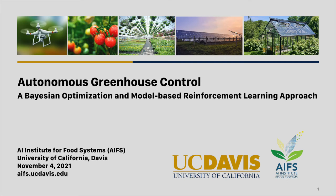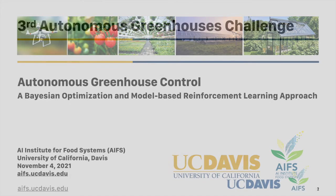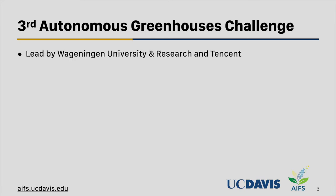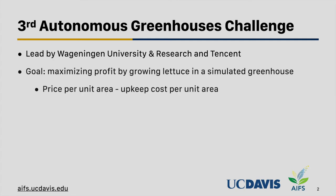This presentation is about our autonomous greenhouse control method with a combination of Bayesian optimization and model-based reinforcement learning, used in the third autonomous greenhouse challenge. This competition is led by Wageningen University and Research from the Netherlands and Tencent. The goal is to maximize profit by growing lettuce in a simulated greenhouse, calculated by subtracting the upkeep cost per unit area — including heating, electricity, and CO2 — from the price of the lettuce per unit area.